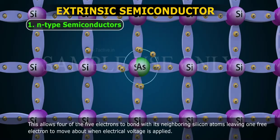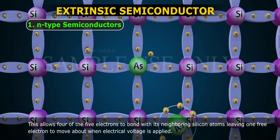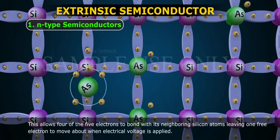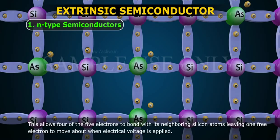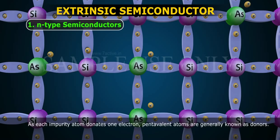This allows four of the five electrons to bond with its neighboring silicon atoms, leaving one free electron to move about when electrical voltage is applied. As each impurity atom donates one electron, pentavalent atoms are generally known as donors.